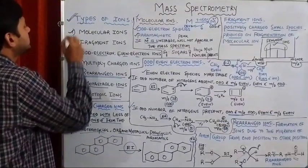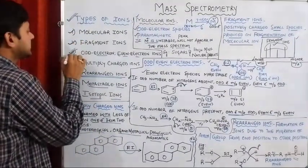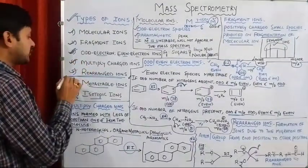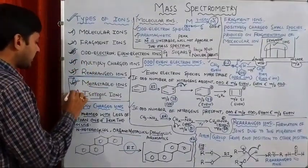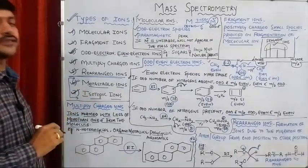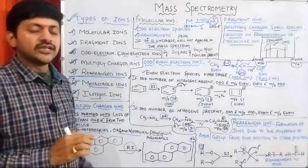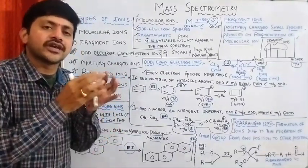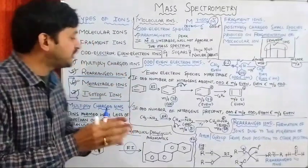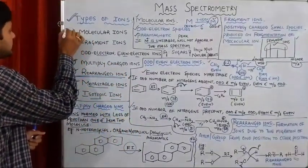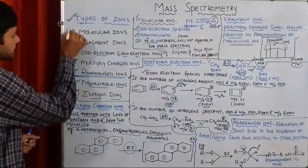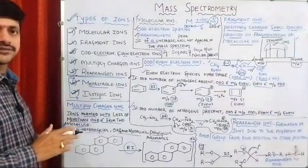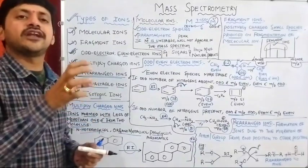What are those? Molecular ions, fragment ions, odd electron, even electron ions, multiply charged ions, rearranged ions, metastable ions, and isotopic ions. Among the seven types of ions, in this particular video we are going to have a brief discussion on the first five ions. For metastable ions and isotopic ions, we will be having separate videos.